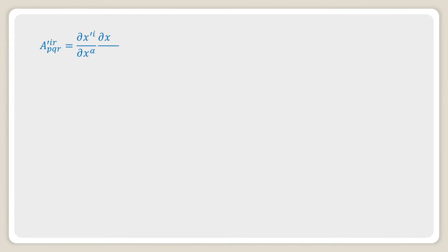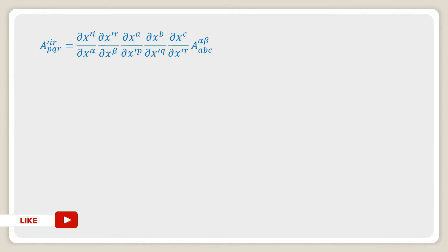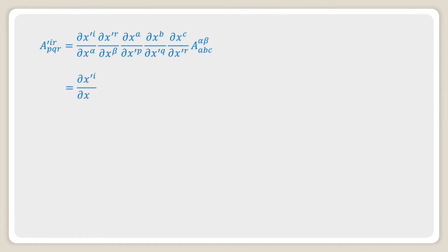Then we get a'^ir_pqr is equal to (∂x'^i / ∂x^α) · (∂x'^r / ∂x^β) · (∂x^a / ∂x'^p) · (∂x^b / ∂x'^q) · (∂x^c / ∂x'^r) · a^αβ_abc. In the next step,